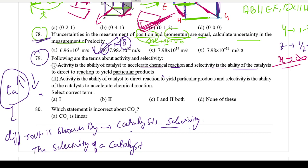The first statement is correct: activity accelerates the chemical reaction, shows a different pathway, reaches faster, and gives more kinetic product. The second statement is incorrect — activity does NOT direct the reaction to a particular path; that is selectivity. So option with only the first statement correct is our answer.